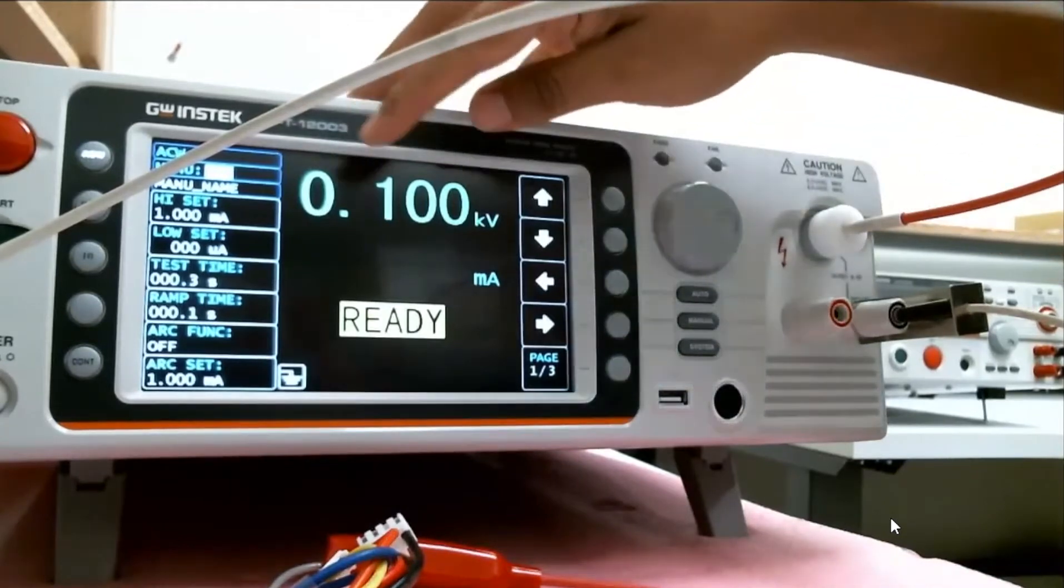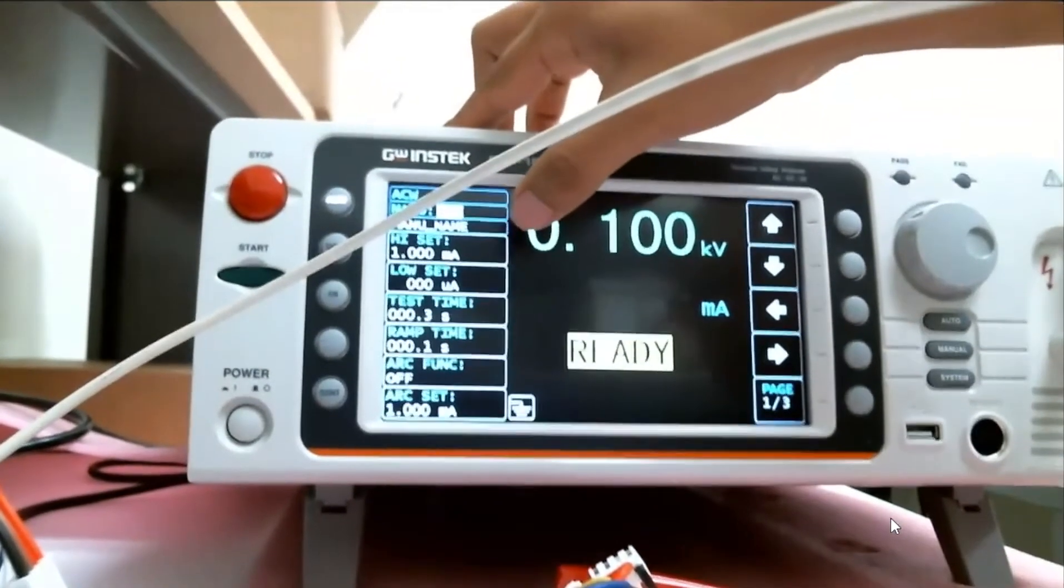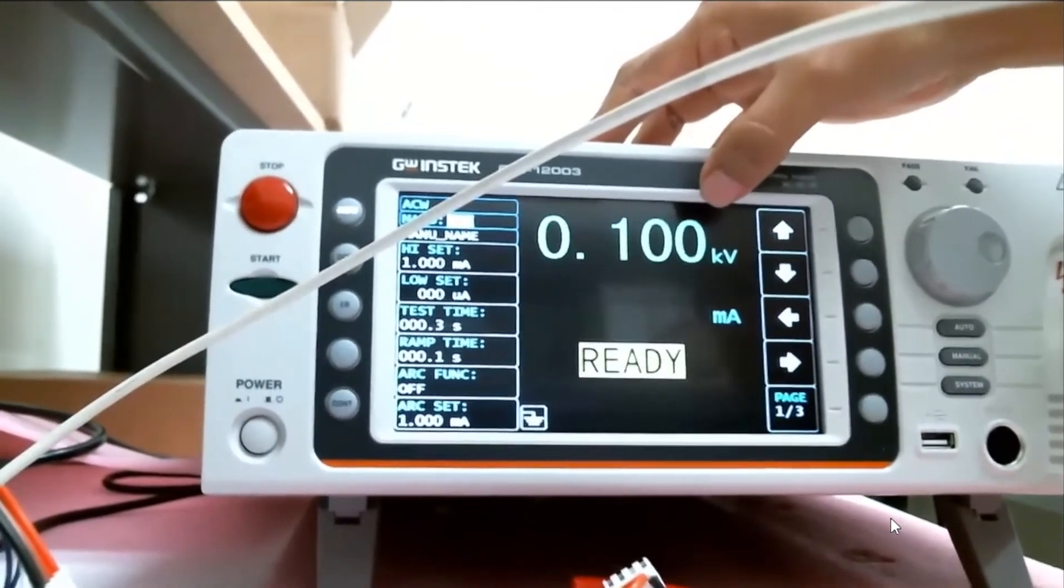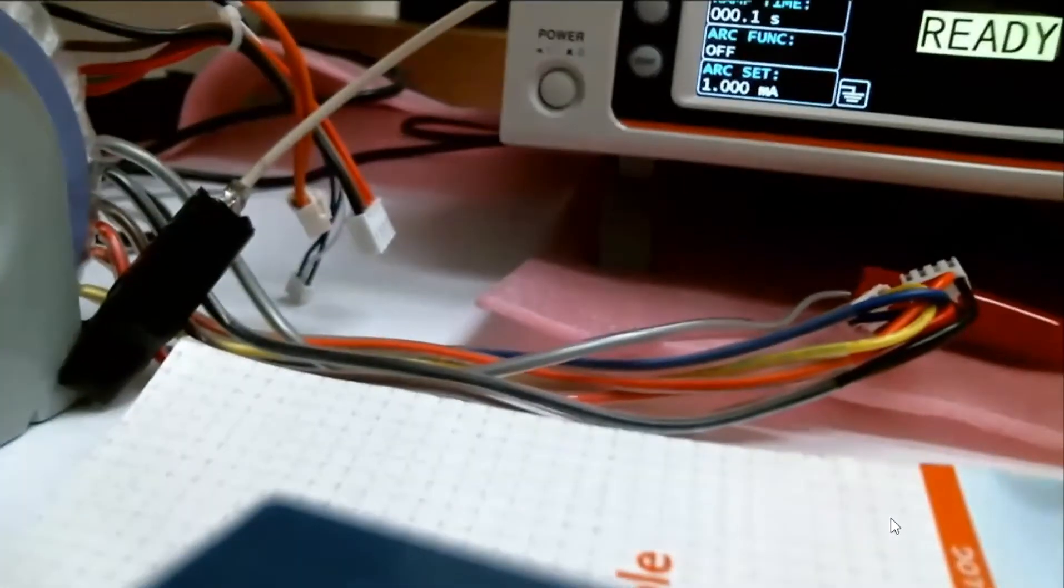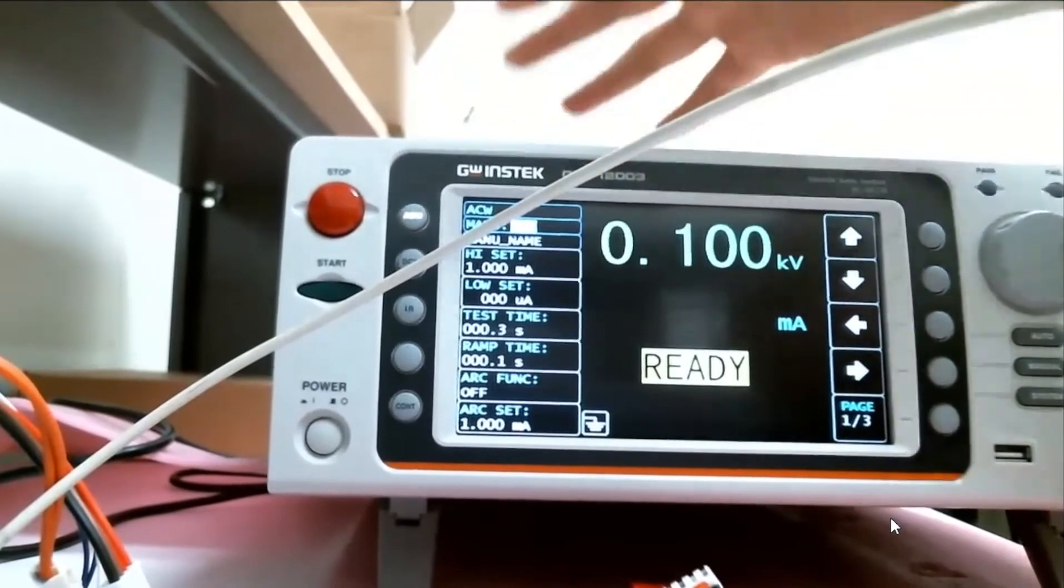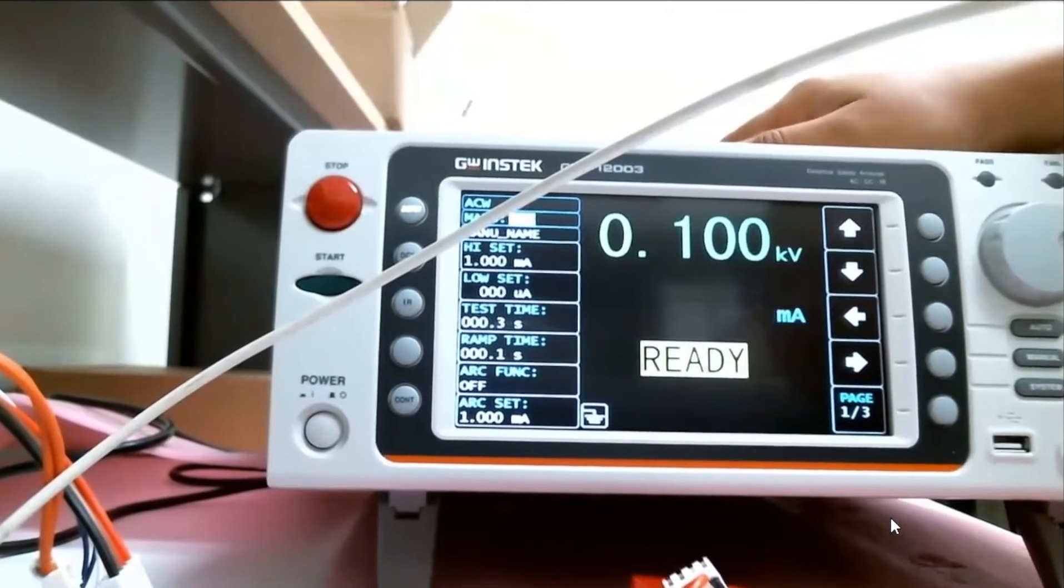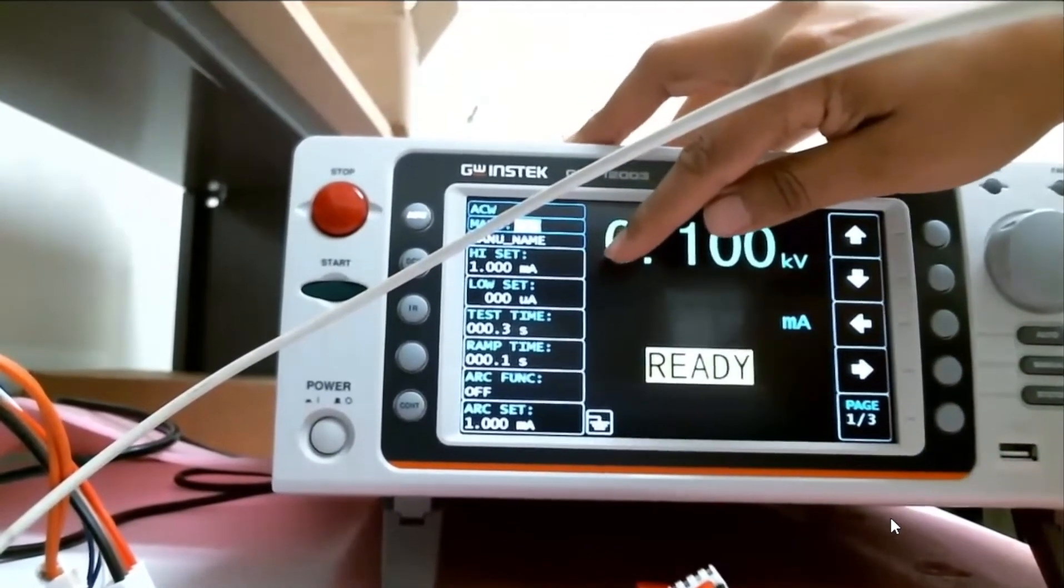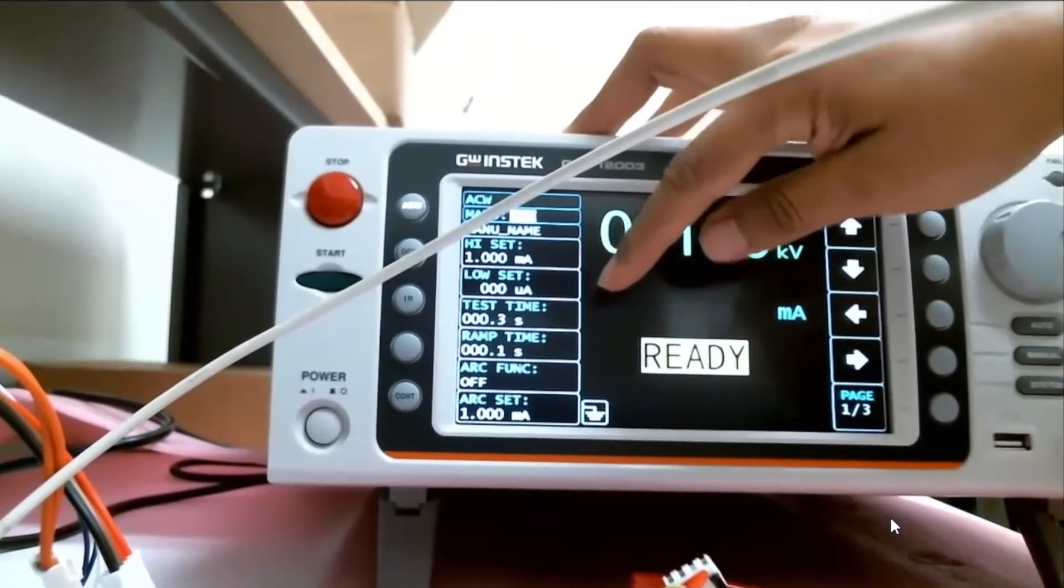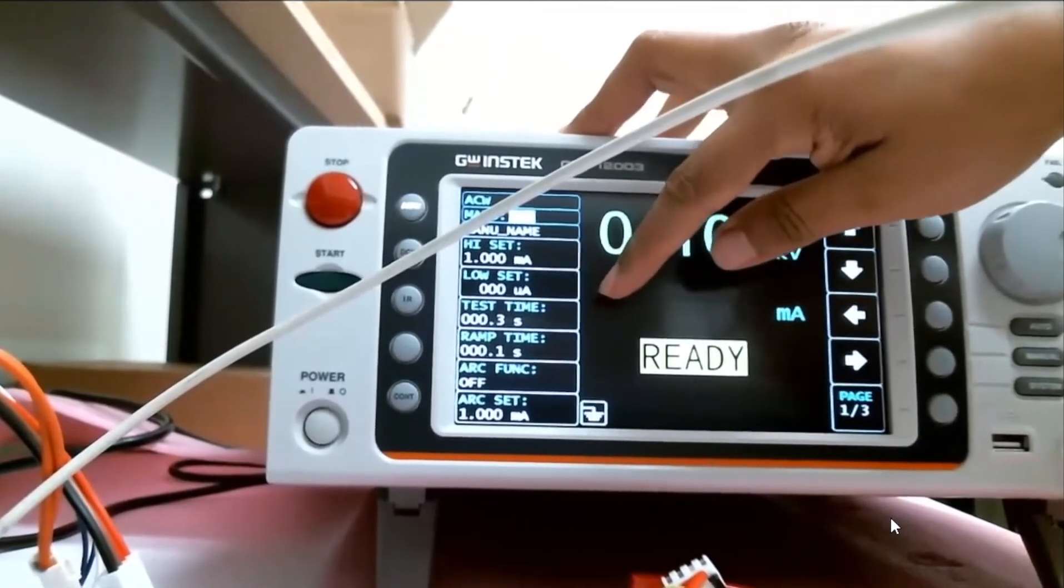I've already done the setup here. My limit, so what I'm telling the instrument here is I'm going to inject 100 volts of potential into this transformer, this transformer winding. And my leakage current can be no more than 1 milliamp. It varies from standard to standard, manufacturer to manufacturer, but these limits are kind of set by the quality department of each manufacturer. What I'm telling you here, my low set, we won't talk too much about that, but I'm going to have it at zero.